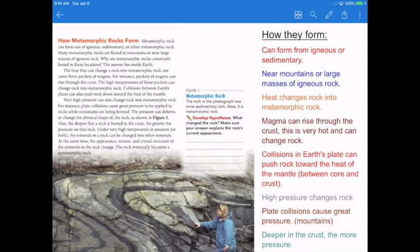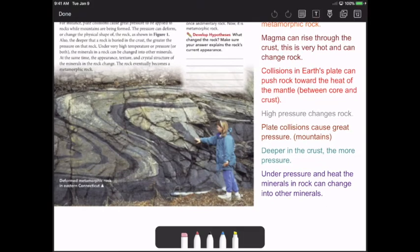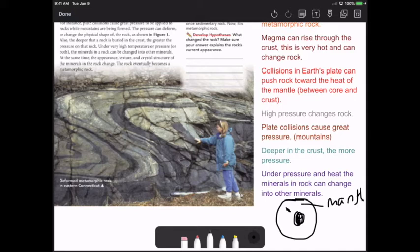It also can create heat in the mantle. The mantle is in between the crust and the core of the earth. So I'll just draw a real quick picture. If this is the earth here and that is the crust, this is the core right here, and then in between is the mantle. So that would be the mantle. All right, next. So I said high pressure can change rock.